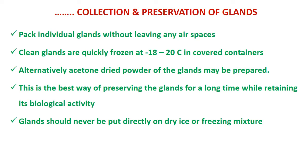Pack individual glands without leaving any air space, either using small pouches of plastic or cotton cloth. Clean glands are quickly frozen at minus 18 to minus 20 degrees Celsius in covered containers. Alternatively, acetone dried powder of the glands may be prepared — this is a good chemical preservation method and the best way of preserving glands for a long time while retaining biological activity. The glands should never be put directly on dry ice or freezing mixture, as that will destroy the activity of enzymes, hormones, etc.